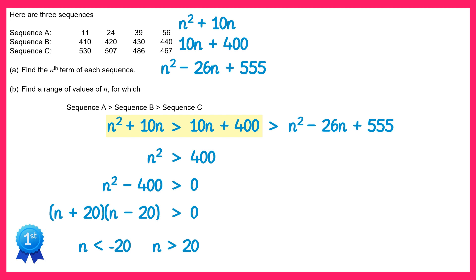Now let's look at the second part of this inequality, when 10n plus 400 is greater than n squared minus 26n plus 555. For this one we're going to start by subtracting 10n from both sides. If you subtract it from the left you get 400, and if you subtract it from the right we end up with n squared take away 36n plus 555. Now let's also subtract 400 from both sides. So on the left hand side we get 0, and on the right hand side n squared take away 36n plus 155.